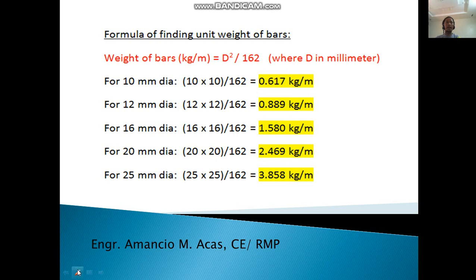This is the formula for finding unit weight of bars. The weight of bars in kilogram per meter equals D squared divided by 162, where D is in millimeter - it should be in millimeter.